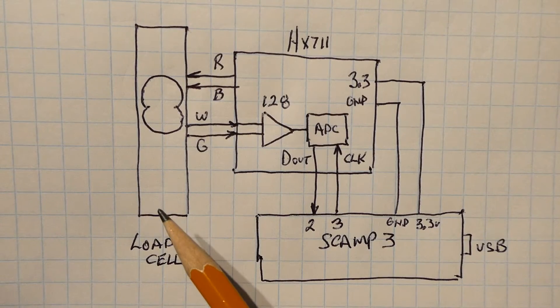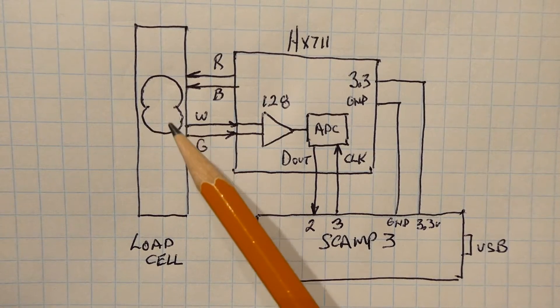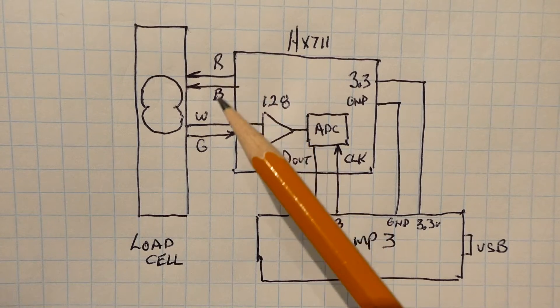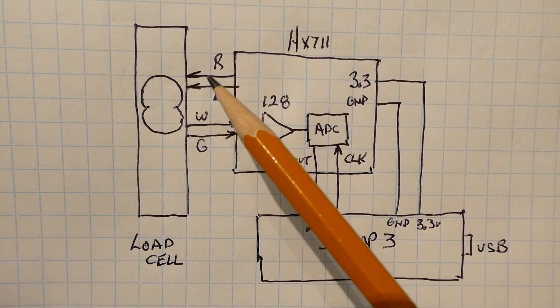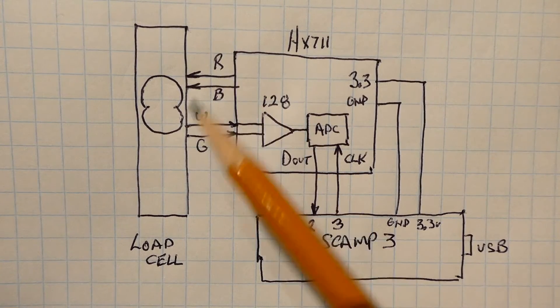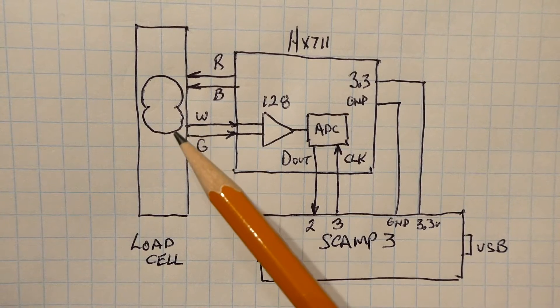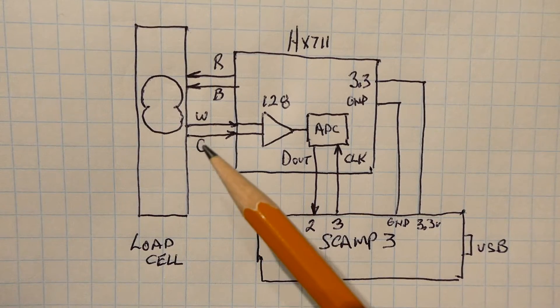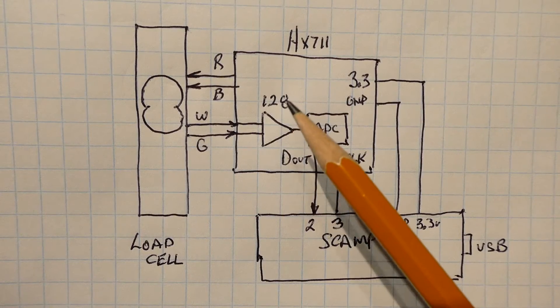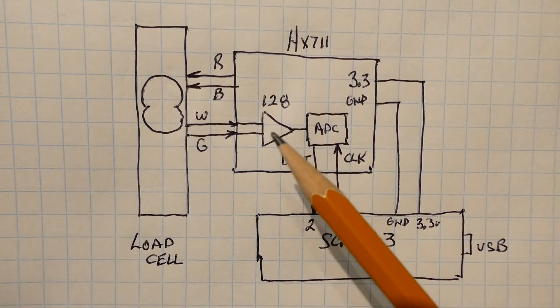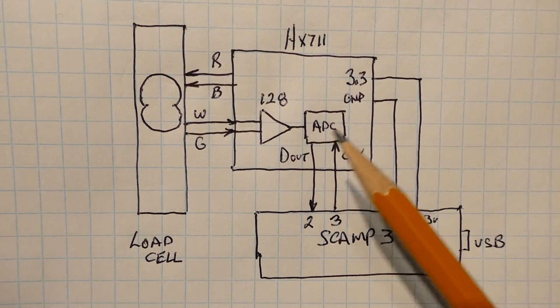On the very left we have the load cell with the four wires that are fed into the HX711. Now the red and black are feeding into the load cell, that's our excitation voltage at 3.3 volts. The white and green wire is coming out of the load cell and that's fed into the HX711 amplifier which has a gain of 128, and output of the amplifier is fed into the 24-bit ADC.